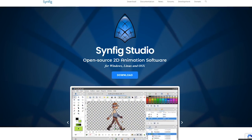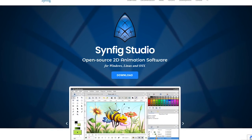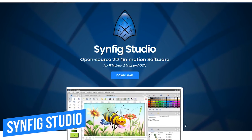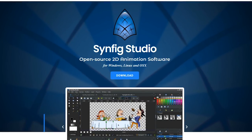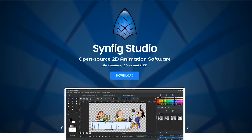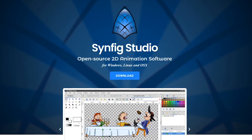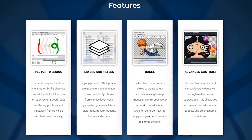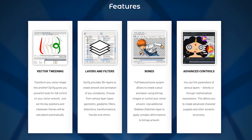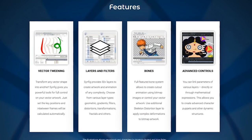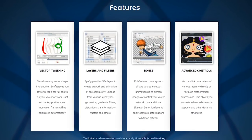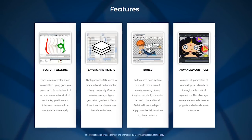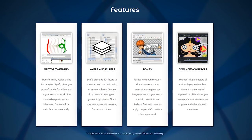We'll start out with the 2D programs first and end this video with the 3D programs. First out of the gate is Synfig Studio. This powerful free and open source vector-based 2D animation software has been around since 2005 and allows for the creation of timeline-based animations. It's feature-packed and provides more than 50 layers to create complex projects, with various layer types including geometric, gradients, transformations, and many others. Some of you will appreciate its fully featured bone system that gives you full control to create natural movements using your artwork.